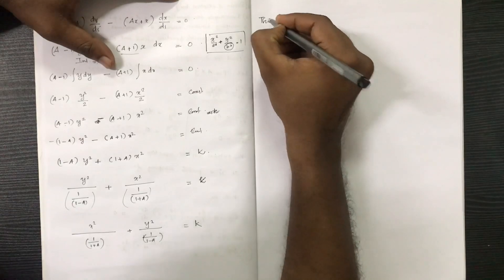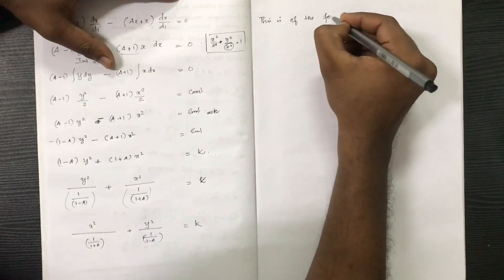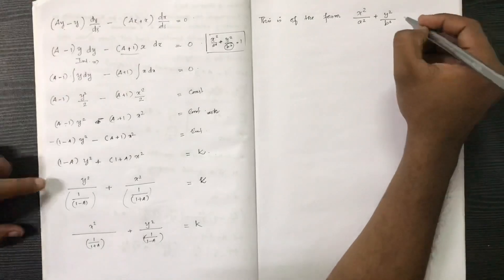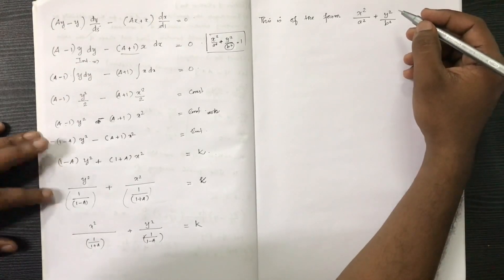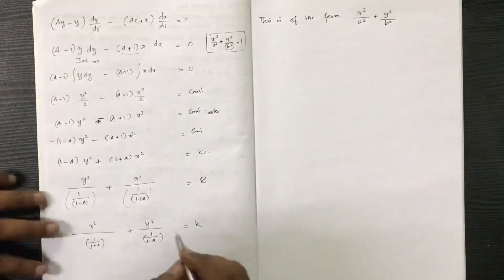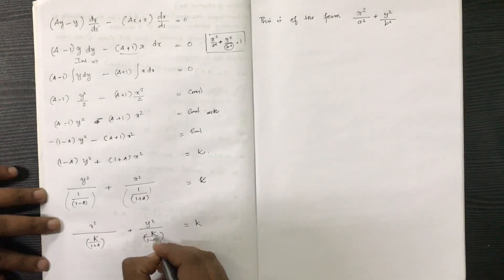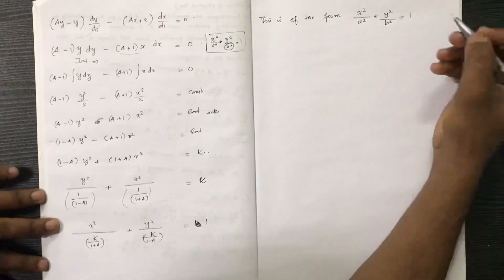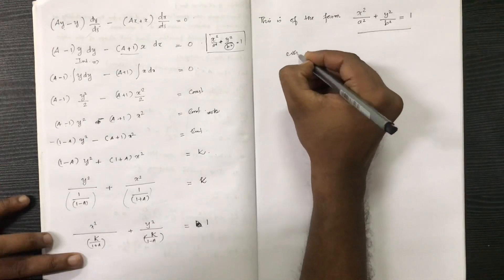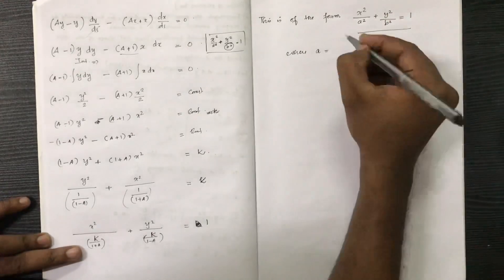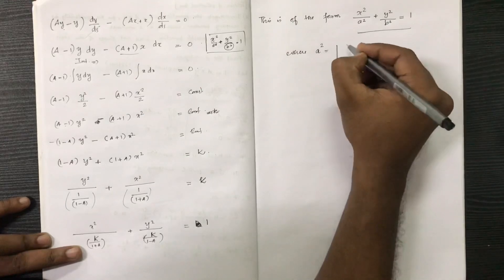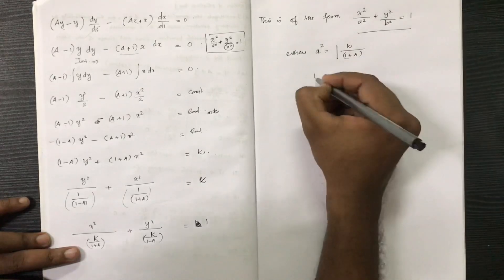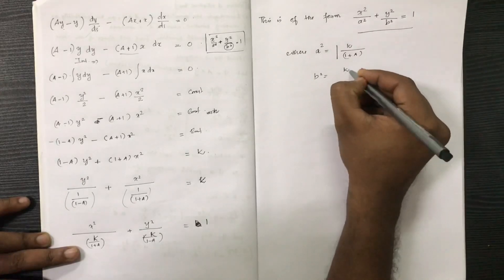This is of the form x²/a² + y²/b² = 1, which is the equation of an ellipse. Comparing, the required values are: a² = k/(1+a) and b² = k/(1−a). This confirms that the boundary condition corresponds to an elliptical cross-section.